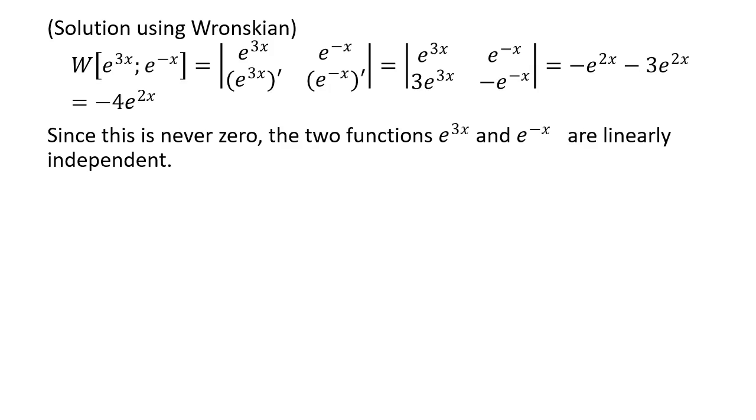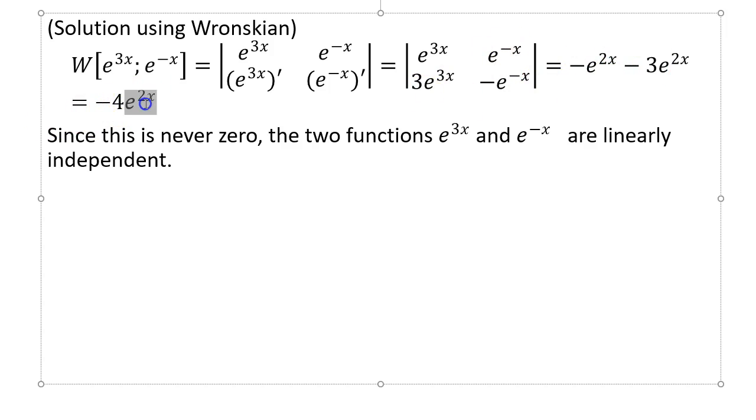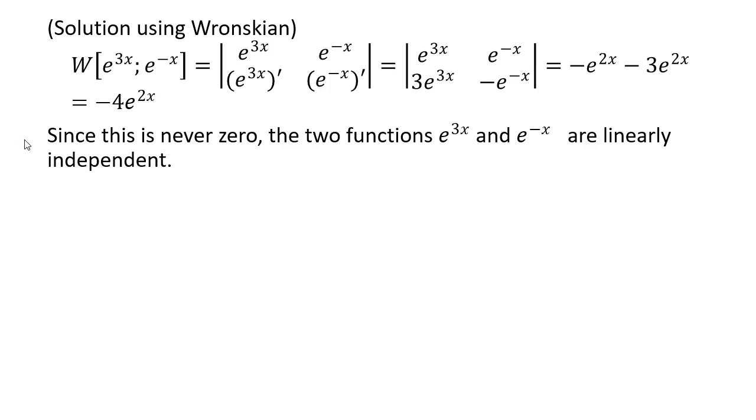Here's the proof using the Wronskian, much easier. All you have to do is take the function, put its derivatives, and then compute the determinant which is ad minus bc. If you compute you get negative 4e to the 2x. You know that the exponential functions can never be zero - it's always non-zero. So this is never zero. What does that mean? That means that the two functions are linearly independent. It's much simpler.